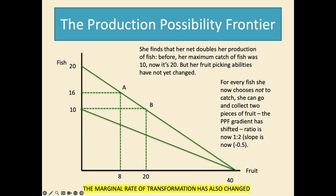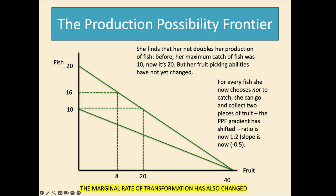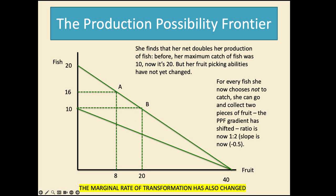So this means with a new frontier for every fish she now chooses not to catch she can go and collect two pieces of fruit. So the gradient has shifted and the ratio is now one to two. So reading the diagram the slope has changed. If she wants extra fruit she gives up half a fish. Or if she wants a fish she gives up two fruit. I've put her choices of production as A or B and the move from one to the other is of the same ratio.